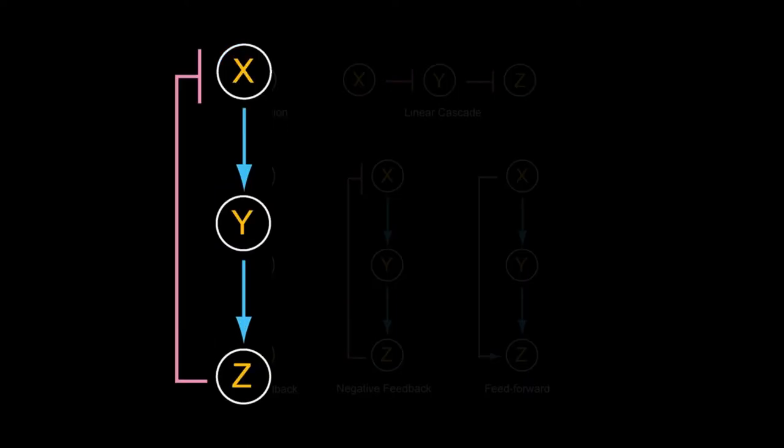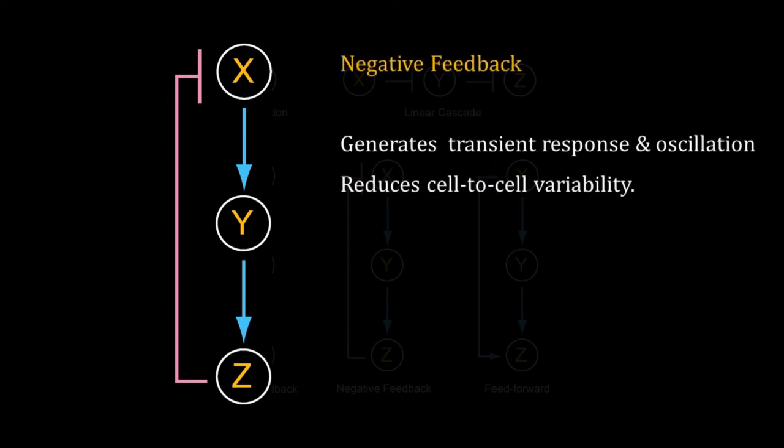X activates Y, Y activates Z, and Z inhibits X. So this is a negative feedback. A negative feedback can generate a transient response, it can generate oscillation, and it can reduce cell-to-cell variability in gene expression.